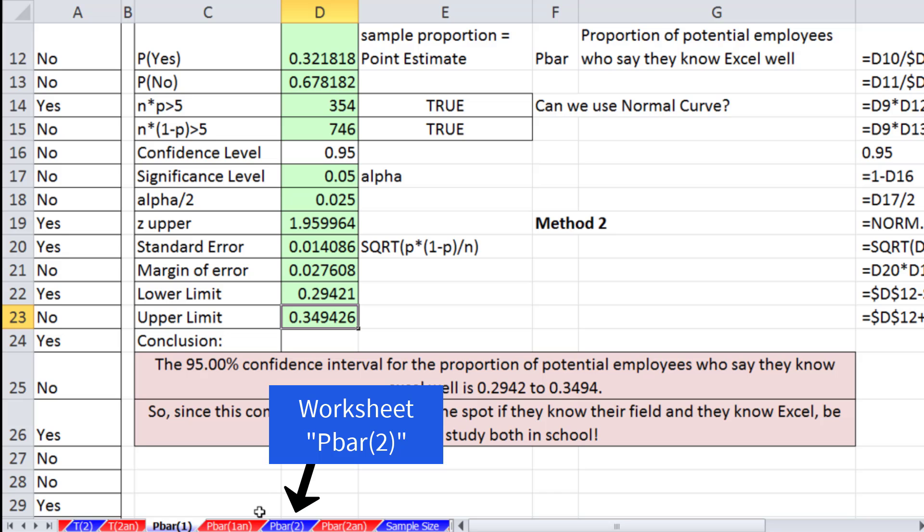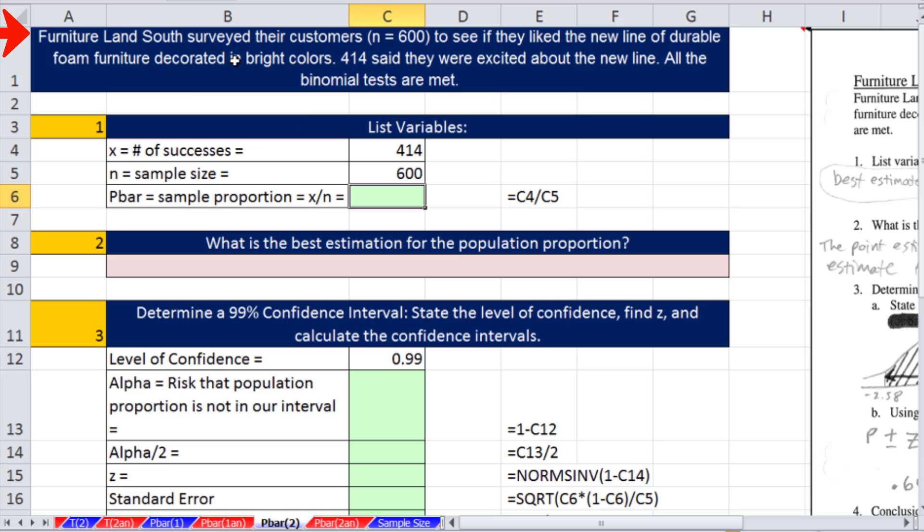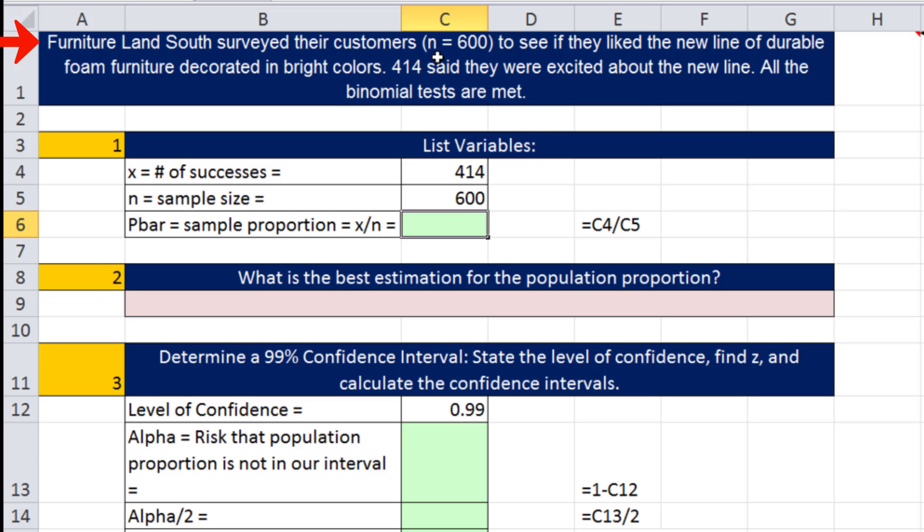Let's look at a second example. Furniture Land South surveyed their customers, n equals 600, to see if they liked the new line of durable foam furniture decorated in bright colors. 414 said they were excited about the new line. All the binomial tests are met. Our variables: we have x number of successes - that is, we like it - and sample size 600. So we can figure out the p-bar: 414 divided by our n is 0.69. Our sample proportion is the best estimate for the population proportion. The owner of Furniture Land is saying, well hey, that's pretty good. Maybe this is a potential product we can launch.